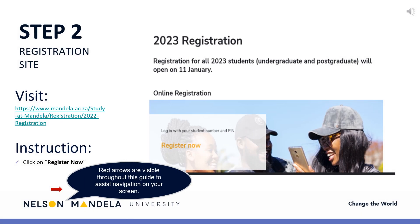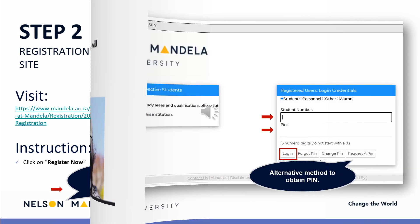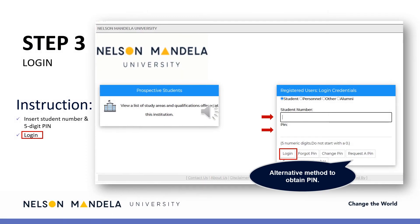Having completed your registration readiness checklist, log in to register now — link provided on screen. Step 3: Make use of your student number and the five-digit PIN to access the registration portal.